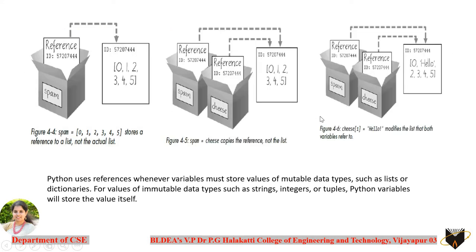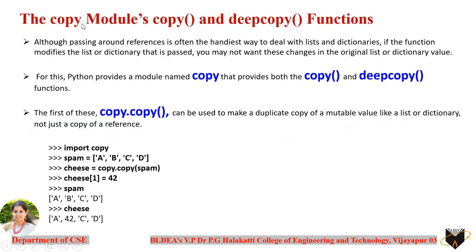Although passing around references is often the handiest way to deal with lists and dictionaries, if a function modifies the list or dictionary that is passed, you may not want those changes in the original. Python provides a module named 'copy' that provides both the copy() method and the deepcopy() method. First import the module, then take any list variable, for example spam with specific content.